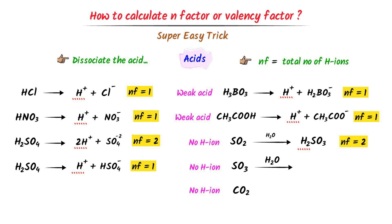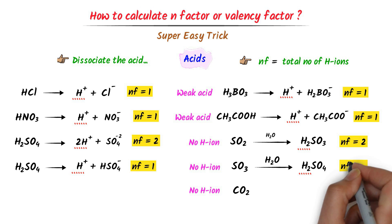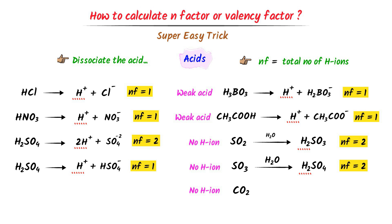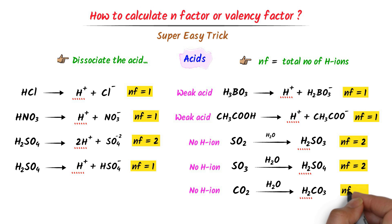Secondly, I add water to sulfur trioxide and we get H2SO4. We already know that when H2SO4 dissociates in water, it gives two hydrogen ions. Two hydrogen ions means its n-factor is 2, so the n-factor of sulfur trioxide is also 2. Thirdly, I add water to carbon dioxide gas and we get H2CO3, also known as carbonic acid. When carbonic acid dissociates in water, it gives two hydrogen ions, so the n-factor of carbon dioxide is 2.